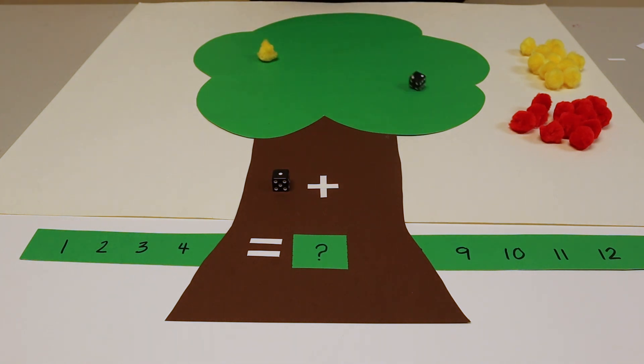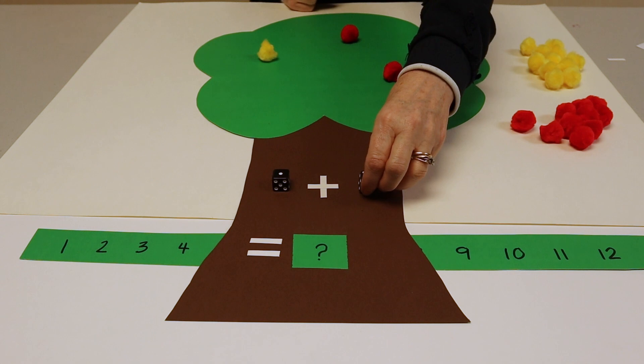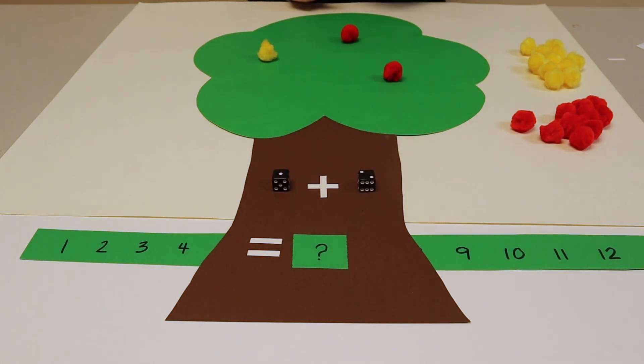Next they'll roll the die and choose two of the red apples and place them on the tree and put the die down beside the plus sign.